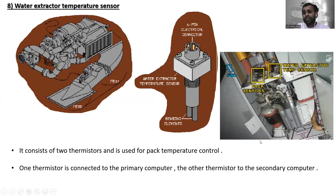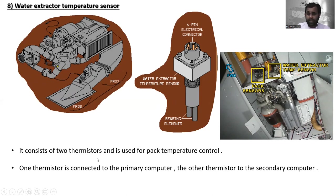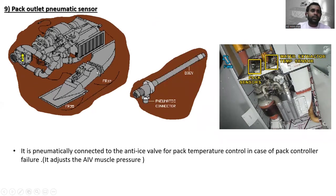The next component is the water extractor temperature sensor. You can see it located here — this is the six-pin electrical connector and the sensing element. The water extractor temperature sensor consists of two thermistors and is used for pack temperature control. One thermistor is connected to the primary computer and the other thermistor to the secondary computer.